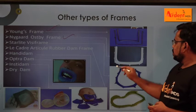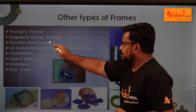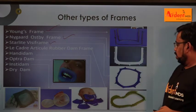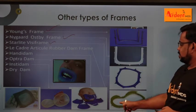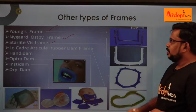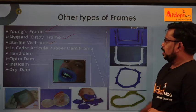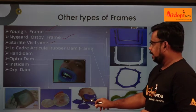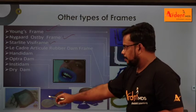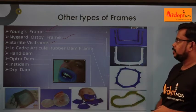This particular frame asked in the question is called the Starvisi frame. There is also a flexible bending type of rubber dam frame called the LeGate/Young frame. Others include the Handy Dam, Optrodam, Instadam, and Dry Dam - these are different types of rubber dam frames.